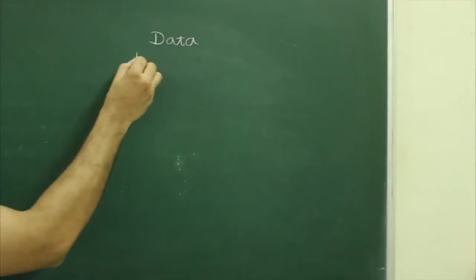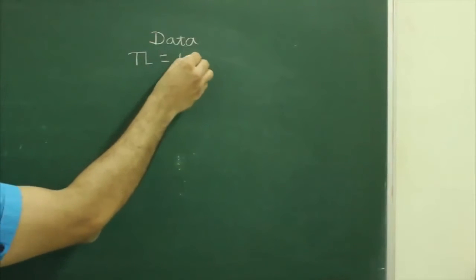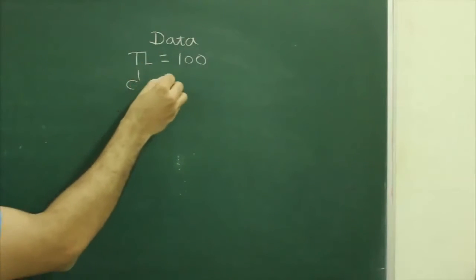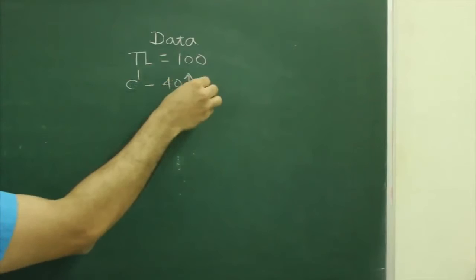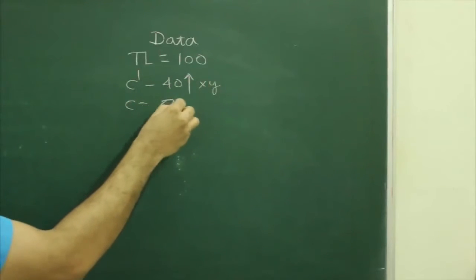First we will write given data: true length 100, c dash 40 above xy line, c 50 below xy line.